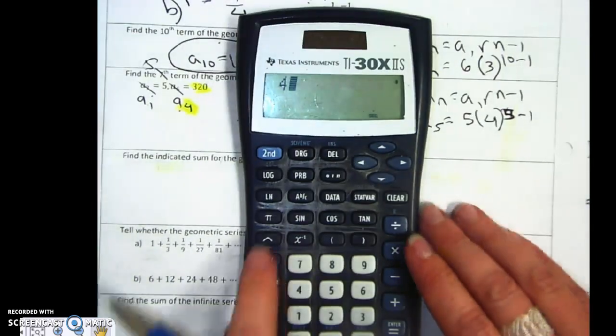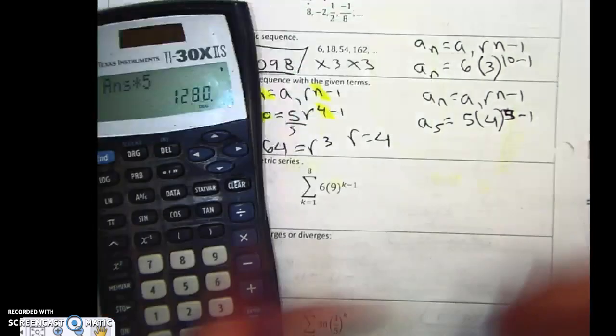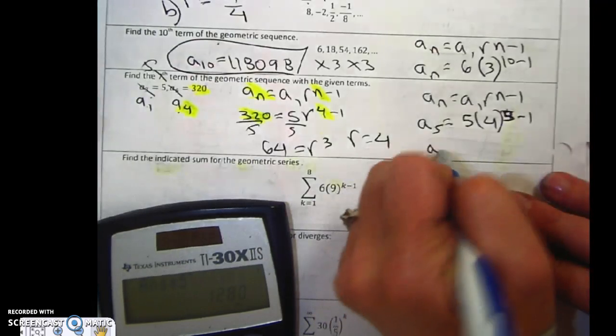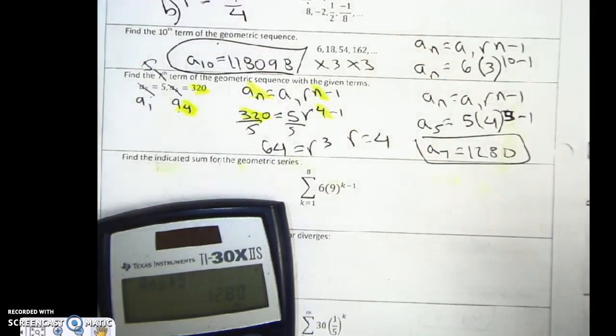So I'm going to go 4 to the 4th because 5 minus 1 is 4, and then times 5, and I get 1280. But it's not my fifth term. It's my seventh term. So a sub 7.